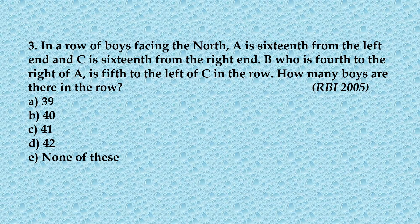Let us now have a look at the third question. In a row of boys facing the north, this is a different type of question where there is an arrangement of boys in a particular row and we have to find out how many boys in all are there. A is 16th from the left, so for this we need to draw a pattern. A is at the 16th position from the left, meaning there are 15 people to the left of A.